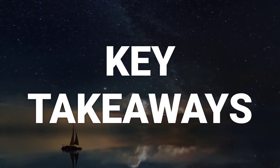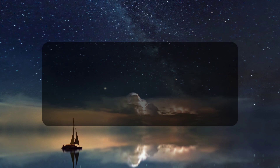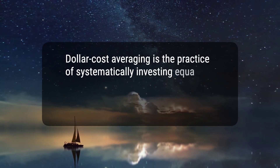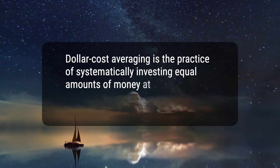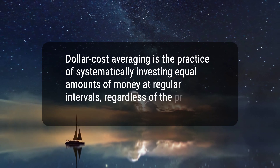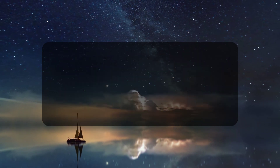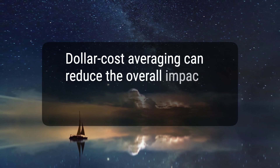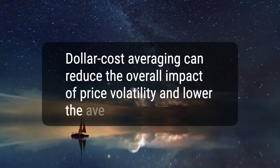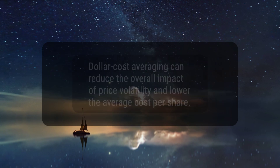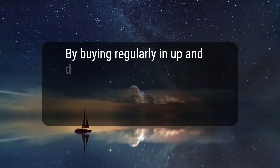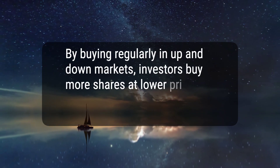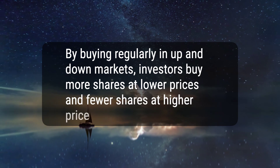Here are 5 key takeaways. 1. Dollar cost averaging is the practice of systematically investing equal amounts of money at regular intervals, regardless of the price of a security. 2. Dollar cost averaging can reduce the overall impact of price volatility and lower the average cost per share. 3. By buying regularly in up and down markets, investors buy more shares at lower prices and fewer shares at higher prices.